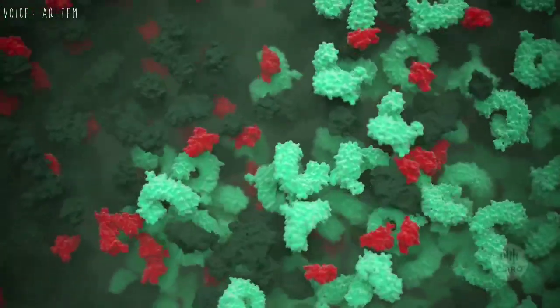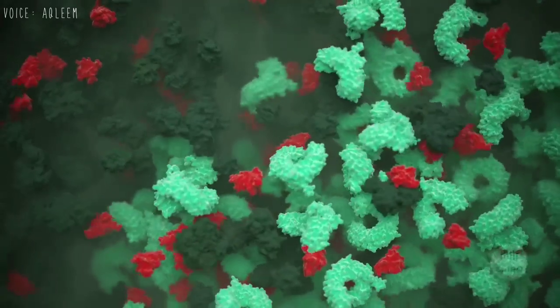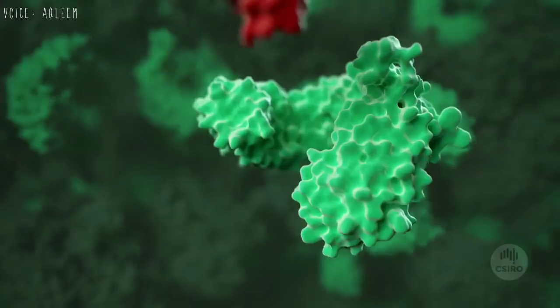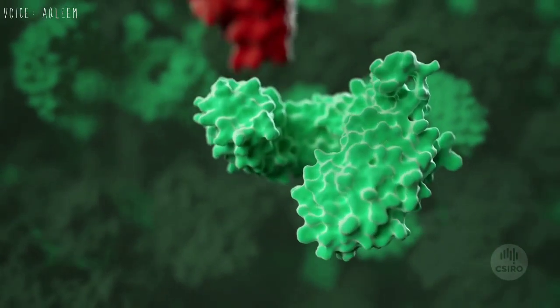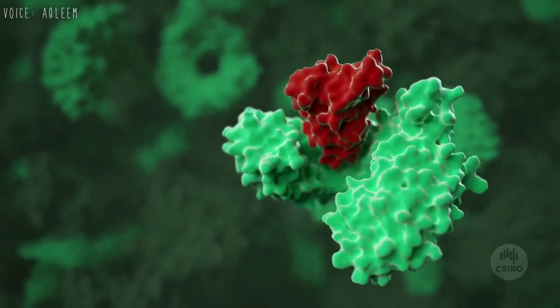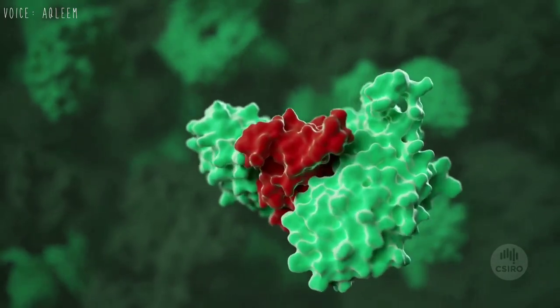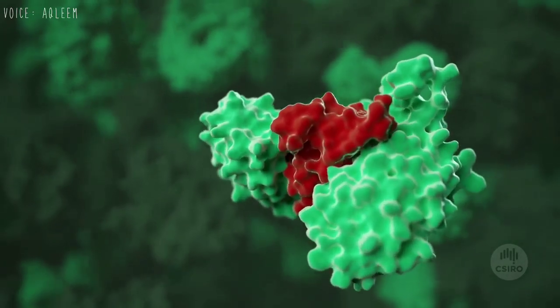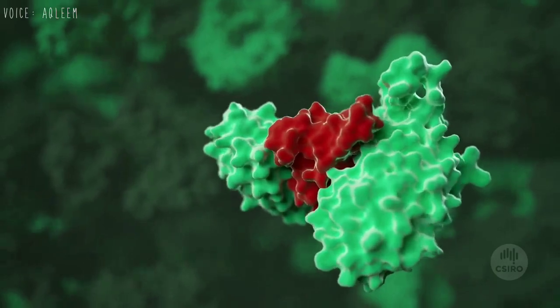The plant has specialized resistant proteins which act like an immune system. The resistant proteins bind to effector proteins. This binding allows the plant to detect that infection is taking place.